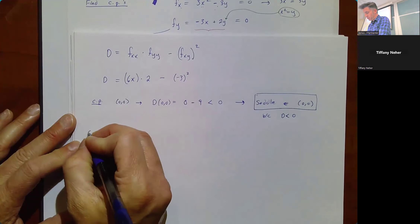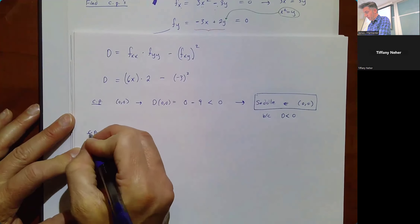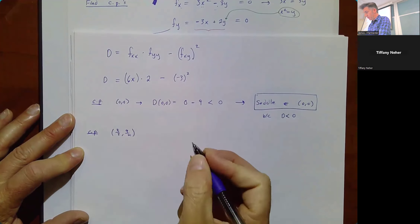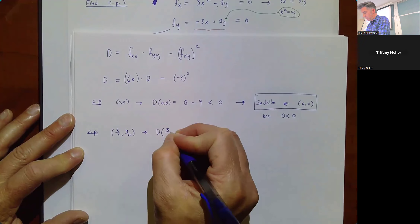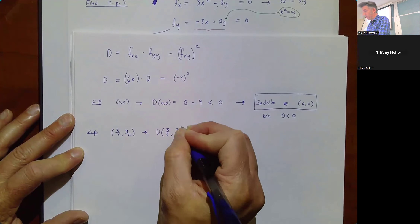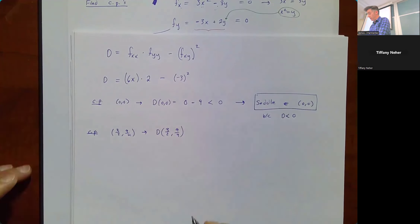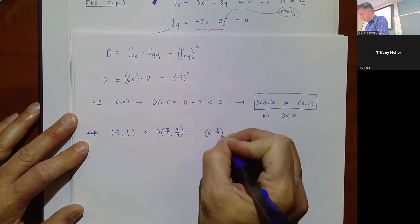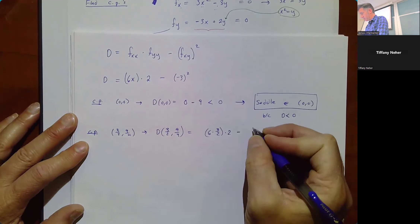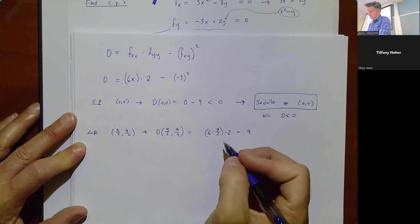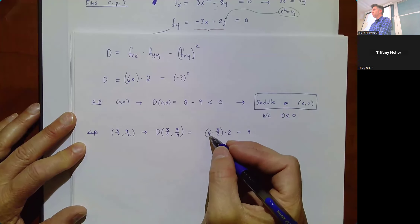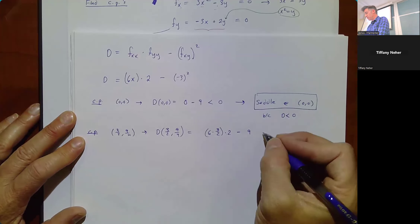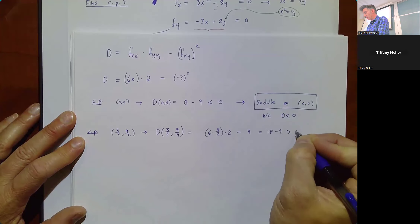For the other critical point (3/2, 9/4): plugging in x = 3/2, we get 6(3/2)(2) - 9. Note there's nowhere to plug in the y = 9/4 here. 6 times 3/2 is 9, times 2 is 18. So D = 18 - 9 = 9, which is positive. When D is positive, you have either a minimum or a maximum, so you need to check the second partial derivatives.